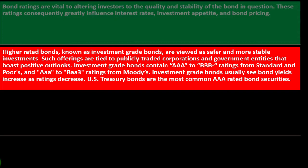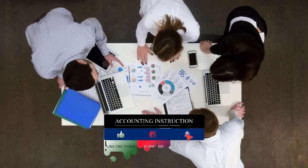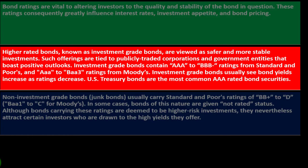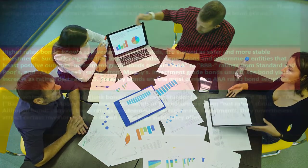Higher rated bonds, known as investment grade bonds, are viewed as safer and more stable investments. Such offerings are tied to publicly traded corporations and government entities that have positive outlooks. Investment grade bonds carry Triple-A to Triple-B ratings from Standard and Poor's, and Aaa to Baa ratings from Moody's. Investment grade bonds usually see bond yields increase as ratings decrease. US Treasury bonds are the most common Triple-A rated bond security and are often used as the benchmark, given their near-zero default risk.